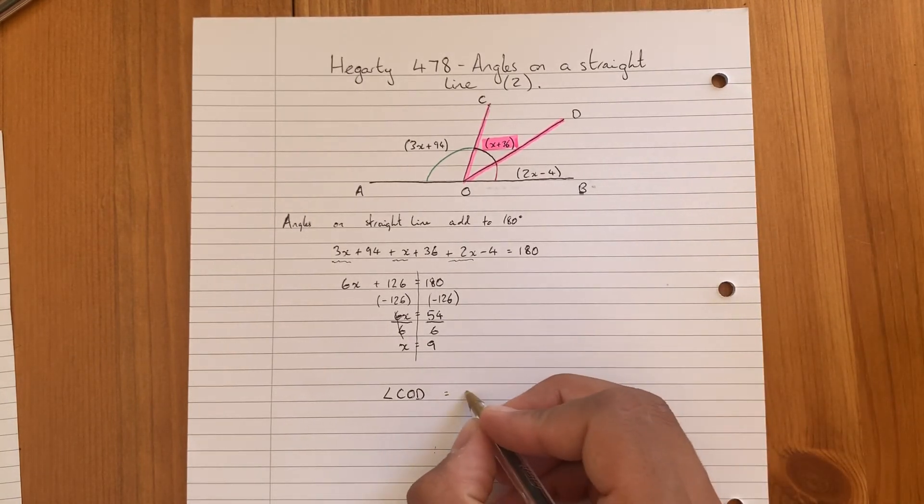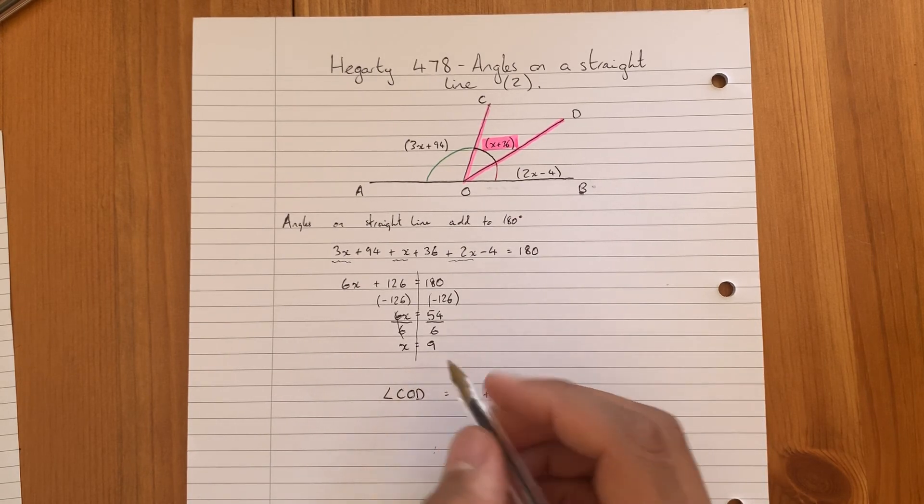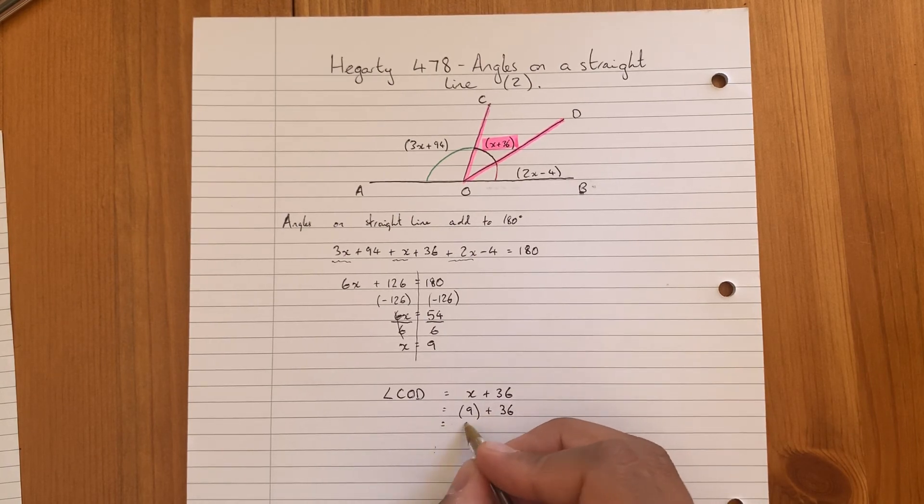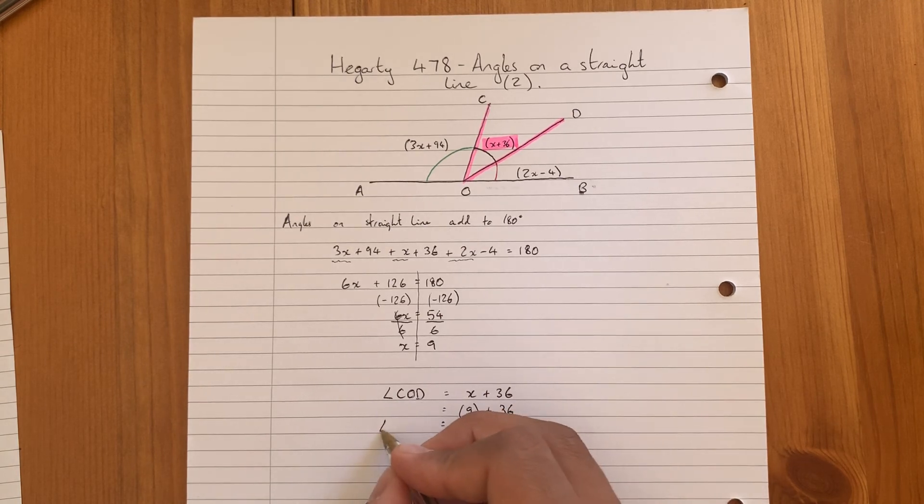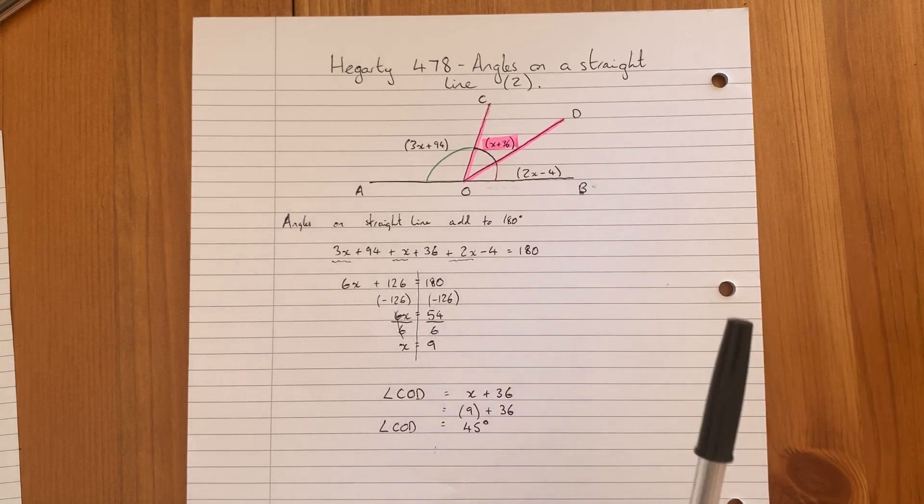So COD equals x plus 36. We've just found that x equals 9, so we can substitute 9 in for x. We're left with 9 plus 36, which equals 45 degrees. Angle COD equals 45 degrees. Any more questions, just give me an email. Good work.